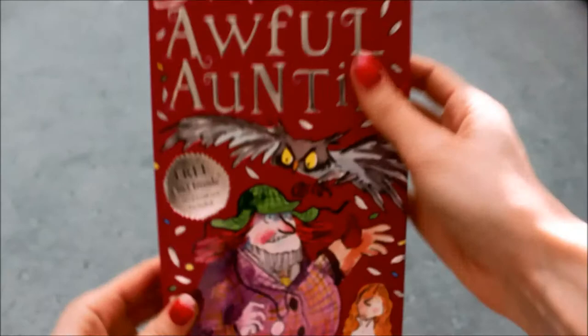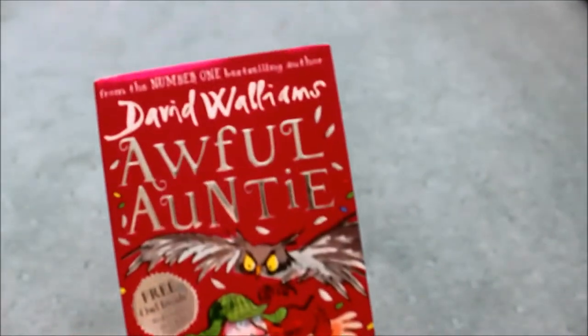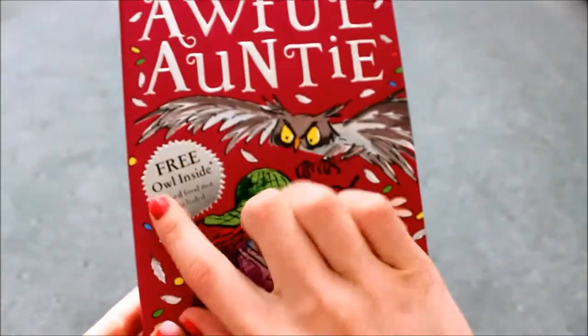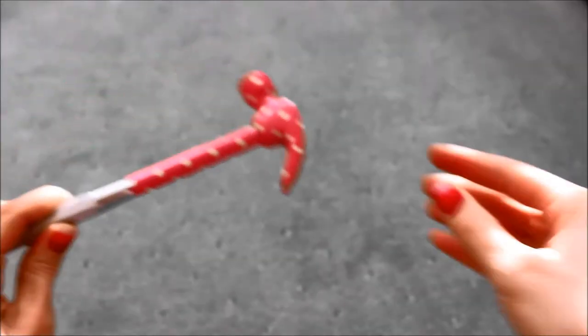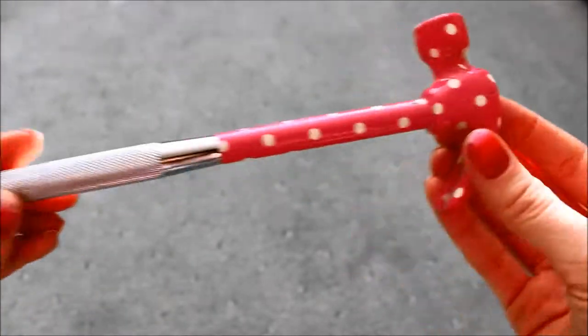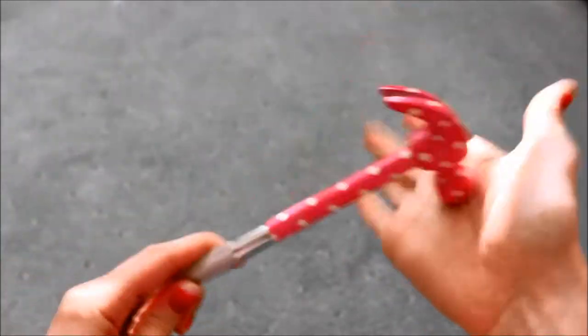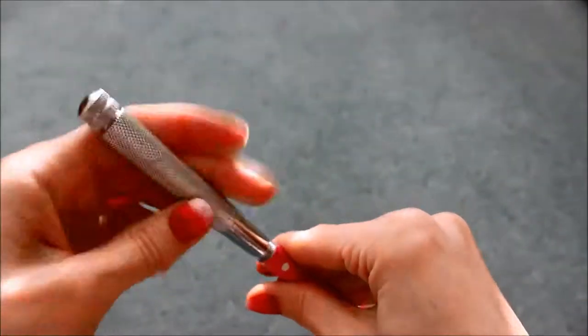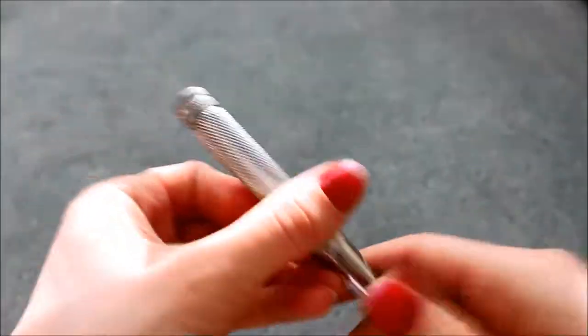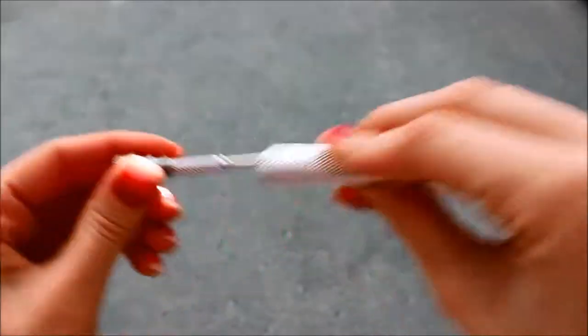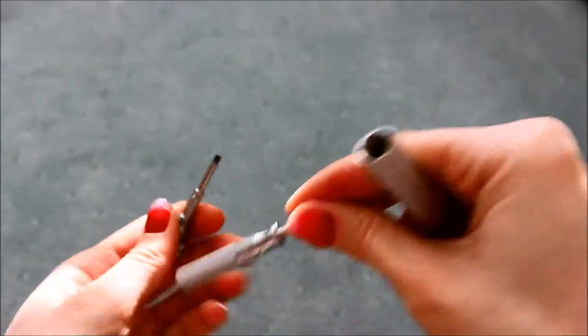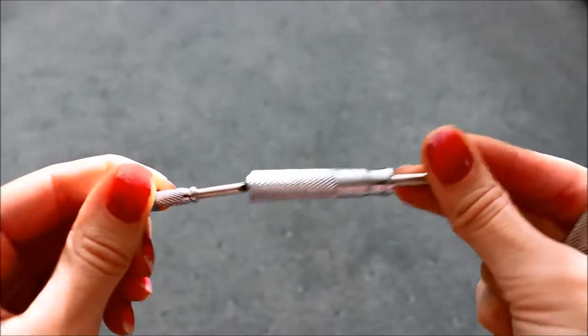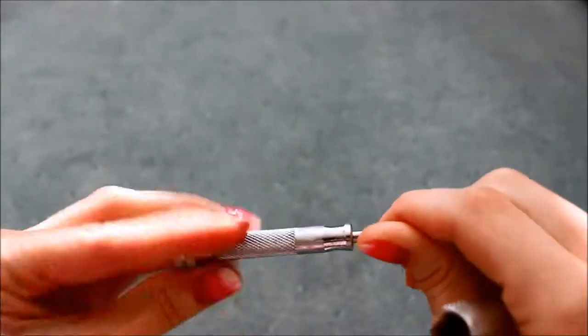I got David Walliams' Awful Auntie book which looks quite amusing to read, and you get a free owl inside. My sister got me this awesome hammer - it's pink with white polka dots and it's a proper hammer, but if you unscrew this part it's a screwdriver. It's like Russian dolls - if you unscrew the bottom part you get another one and it keeps going down, so cute little screwdrivers.